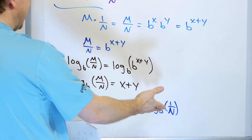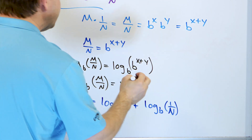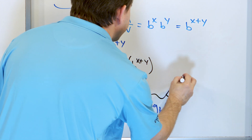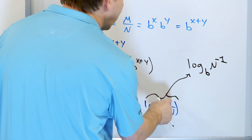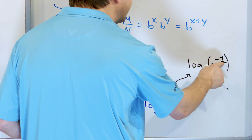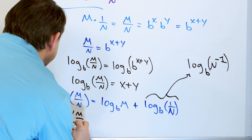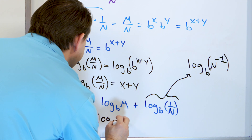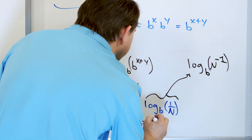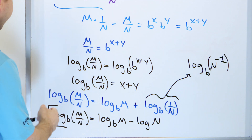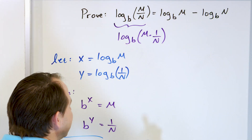Now, log base b of 1 over n is the same as log base b of n to the minus 1, because 1 over n equals n to the minus 1. Since that's an exponent, it can come out in front. So we get log base b of m over n equals log base b of m plus negative 1 times log base b of n, which gives us log base b of m minus log base b of n. That is exactly what we were trying to prove.